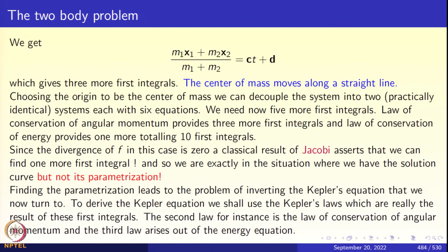Now we have a system of six differential equations and need five more integrals. There is no external torque, so angular momentum is conserved — three more first integrals. Energy conservation gives one more. Combined with the six from linear momentum (three from the conservation law plus three from integrating), we have ten first integrals total. The divergence of the system is zero, and a classical result of Jacobi gives one more first integral — bringing us to exactly eleven. We are in the situation where we have the solution curve but not the parameterization.